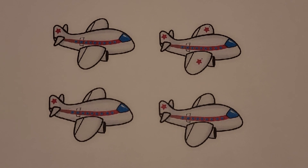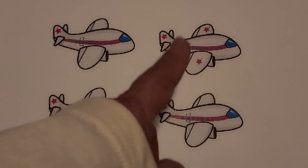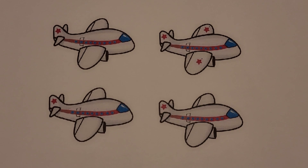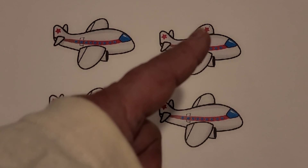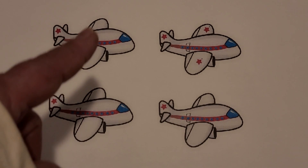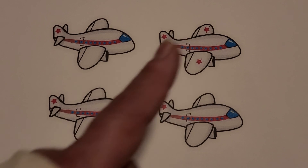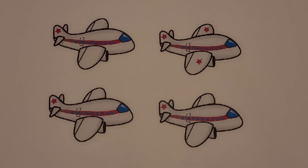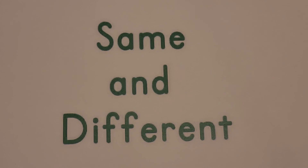Here we have some airplanes. Can you find the airplane that is different? If you said this airplane, you're correct. This airplane has red stars on its wings. These airplanes don't have any stars on their wings. This airplane is different. Now you can find things that are the same or different around your home.